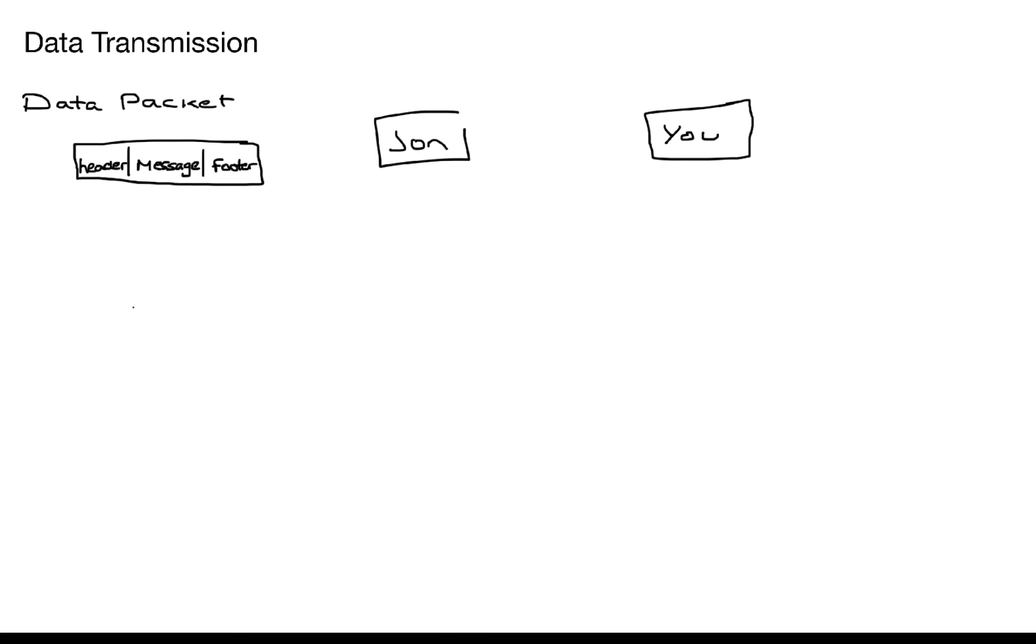In any network, packets of information or data have to be sent from A to B and it can go in a number of different routes around the network. Inside our data packet we have three distinct parts: the header, the message or the data itself, and the footer.